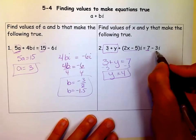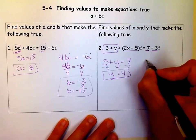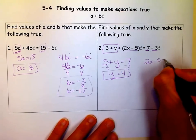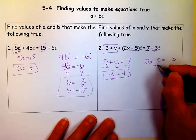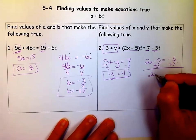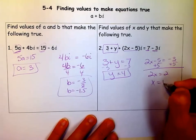And over here, this is the imaginary part, and so is this. So we say 2X minus 5 equals negative 3. And we add 5 to both sides. We get 2X equals 2, so X must equal 1.